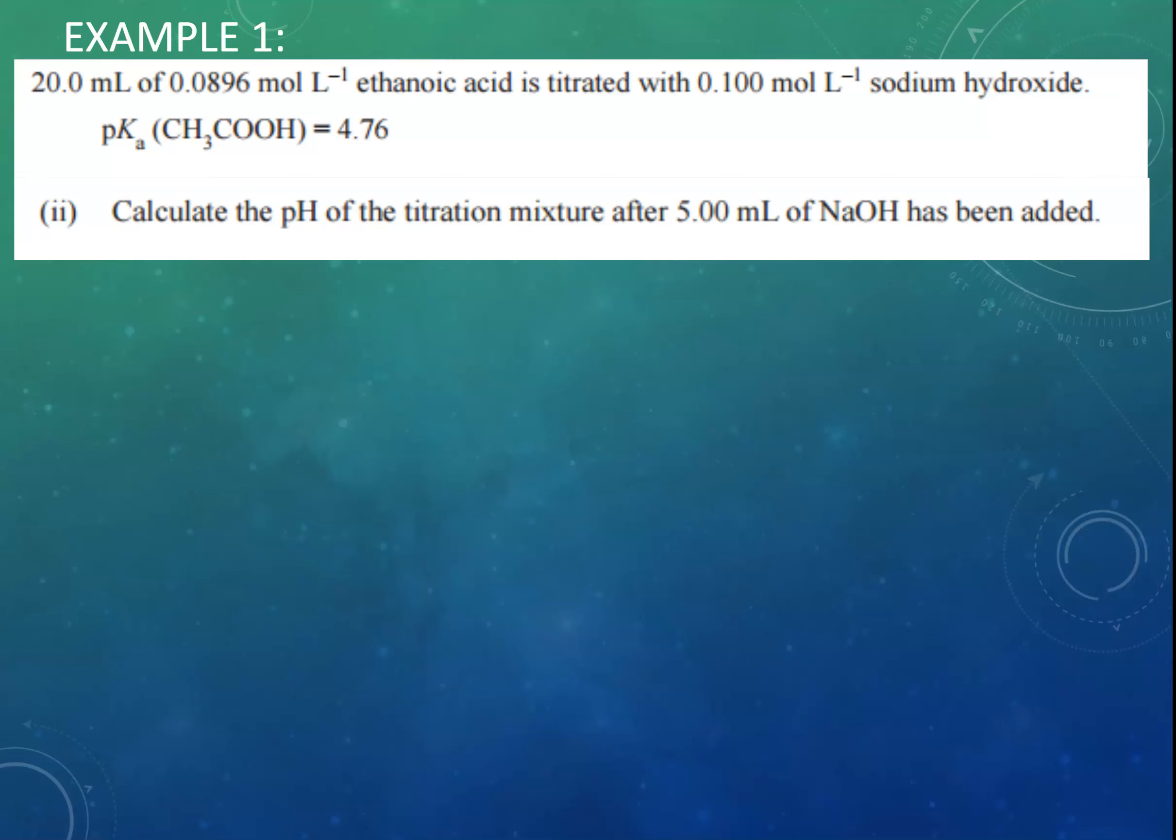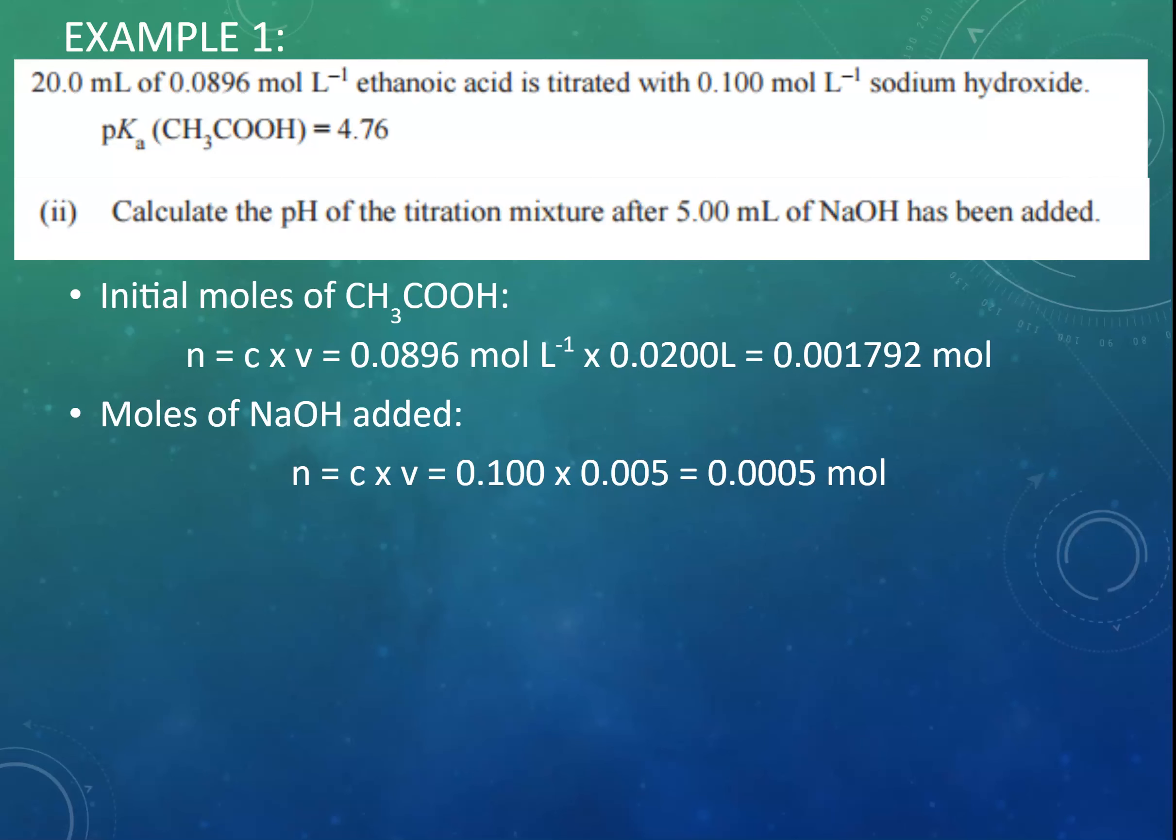Okay, so the first thing we're going to think about. Initially, we've got 20 mL of ethanoic acid. 20 mL of ethanoic acid, I should say. We can calculate how many moles of that there is. Okay, so that's our initial moles of ethanoic acid.